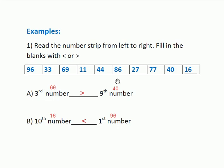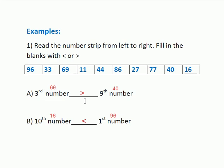And the ninth number: count 1, 2, 3, 4, 5, 6, 7, 8, 9 — the number in the ninth position is 40. So the numbers are 69 and 40. When we compare 69 to 40, 69 is greater than 40. So we put the greater than symbol here. Next, tenth number versus first number. The number in the tenth position is 16, and the first number is 96. When we compare 16 to 96, 16 is less than 96, so we put the less than symbol here.